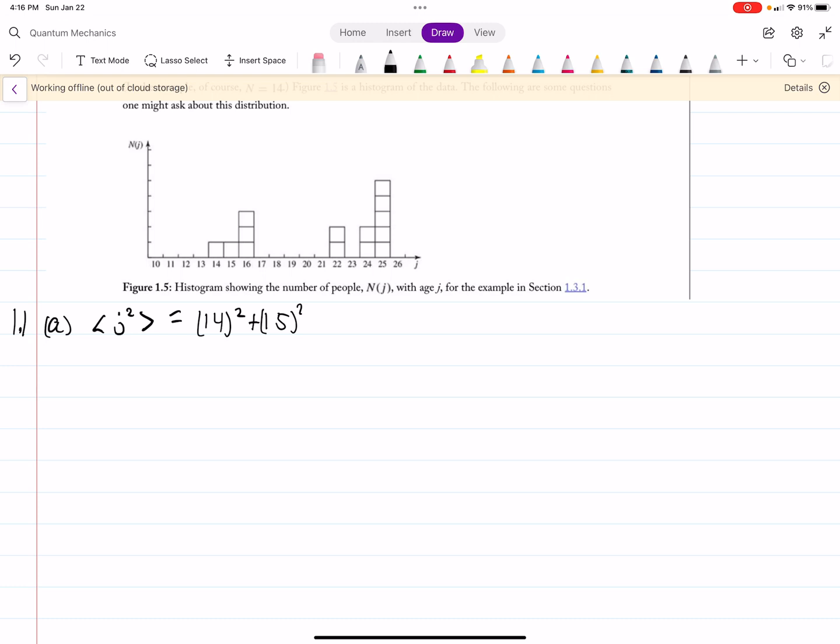There's one 15 data point. And then there's three 16 data points, so we'll do plus 3 times 16 squared, plus 2 times 22 squared, plus 2 times 24 squared, and then plus 1, 2, 3, 4, 5 times 25 squared.